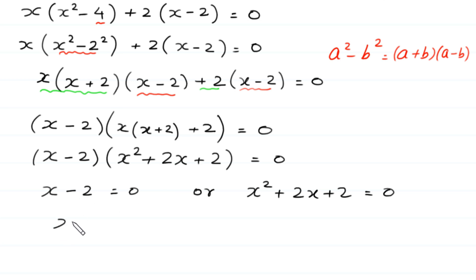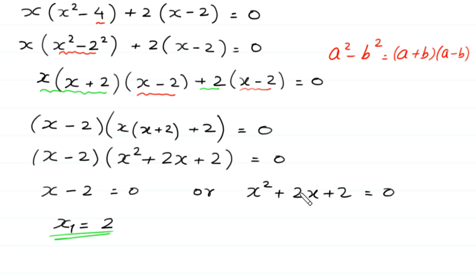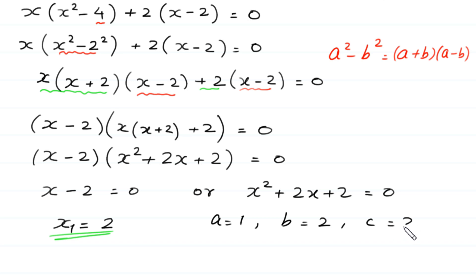From x minus 2 equals 0, we get x equals 2. This is the first value of x. Now, to find the other two values, we solve this quadratic equation. Since it is not factorable, we solve it by the quadratic formula. In this equation, a equals 1, b equals 2, and c equals 2.